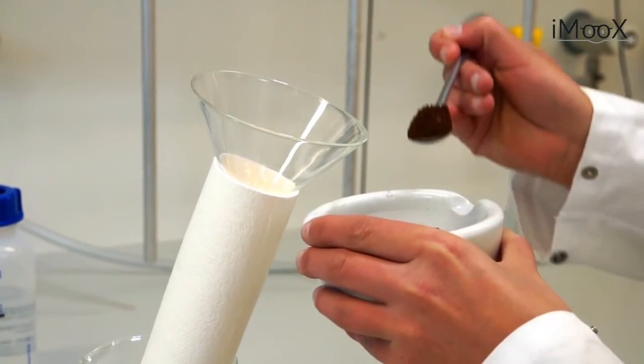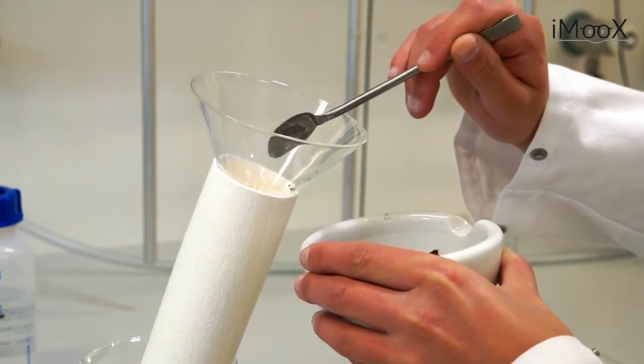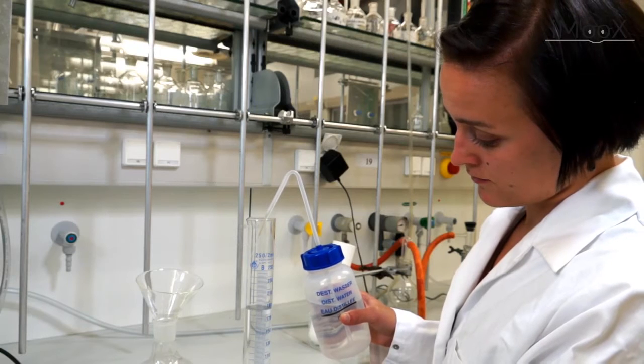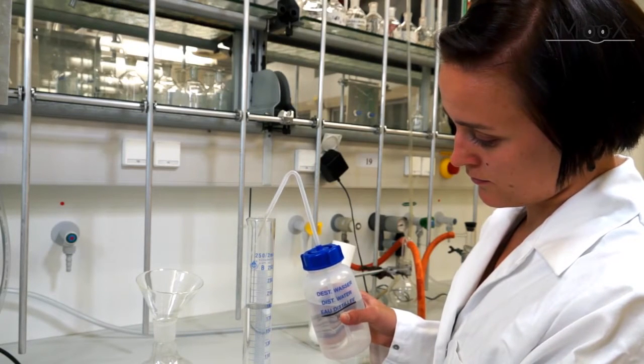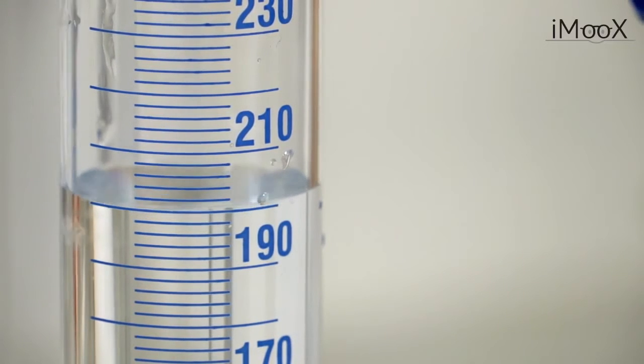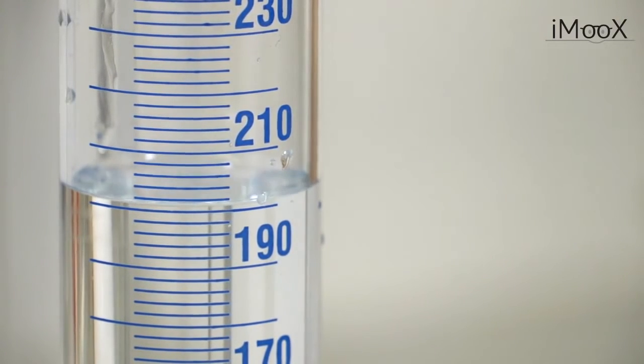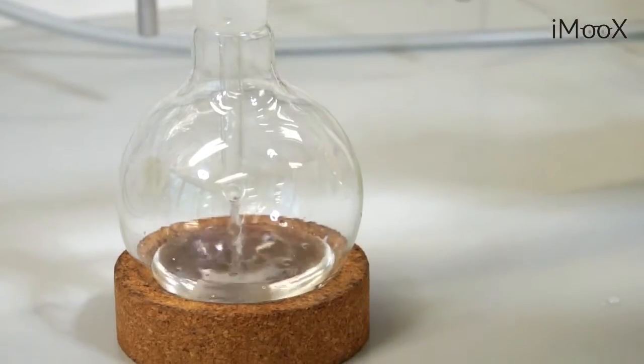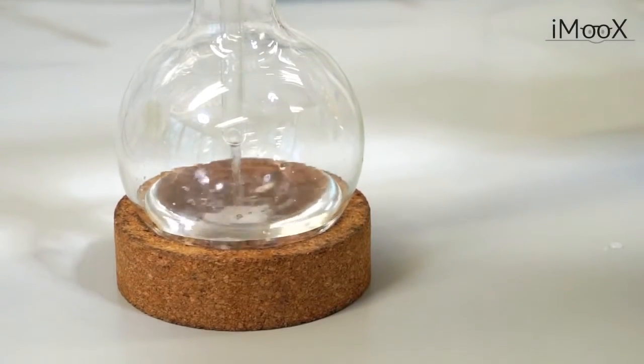Larissa transfers the coffee powder into the thimble using a powder funnel. And now for our second basic ingredient. Larissa uses a measuring cylinder and a squirt bottle to measure the water with precision. Now she pours the water into a round bottom flask and leaves it in the cork ring.